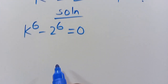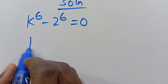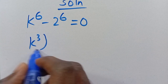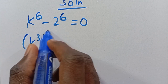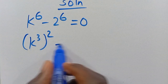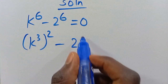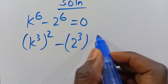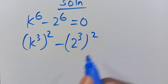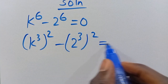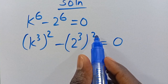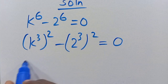Then, having known that, let's simplify this as k to the power of 3 in parentheses to the power of 2, since 3 times 2 gives us 6, minus 2 to the power of 3 in parentheses to the power of 2, since 3 times 2 gives us 6. Then let's set them equal to 0. This is the difference of two squares because it has power of 2, power of 2.